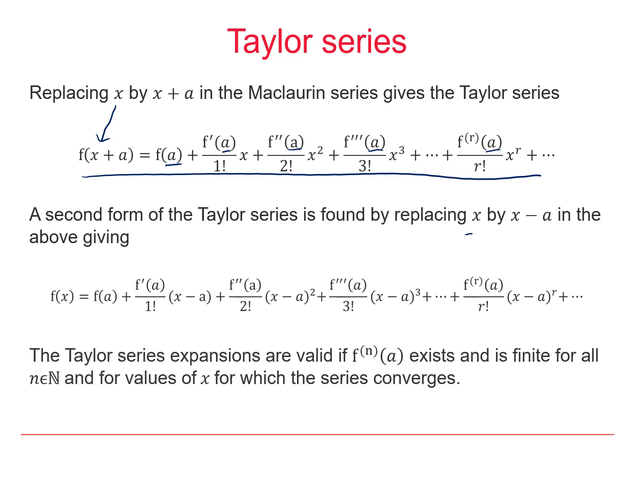There is a second version of the Taylor series where we replace all the x's with x minus A. So we're now evaluating the function at x as we have x minus A plus A gives us just x and then all the powers of x are replaced with powers of x minus A.